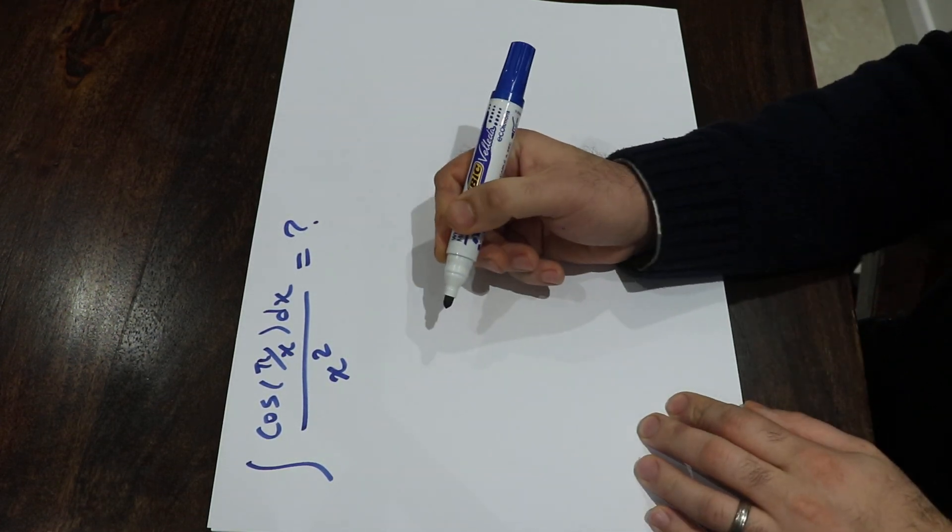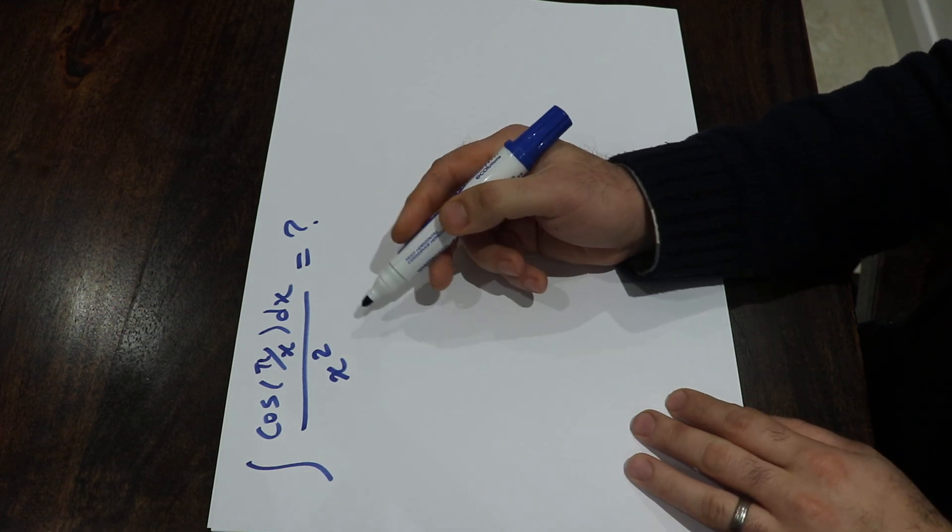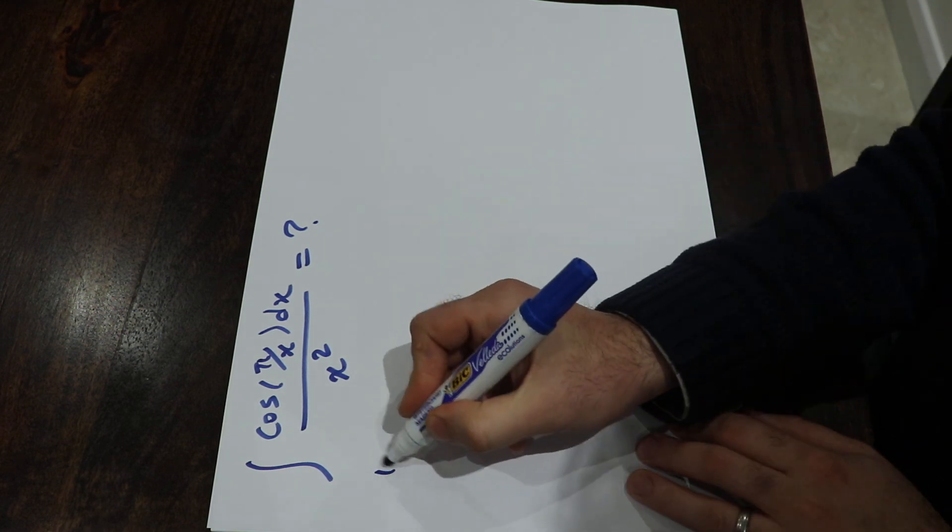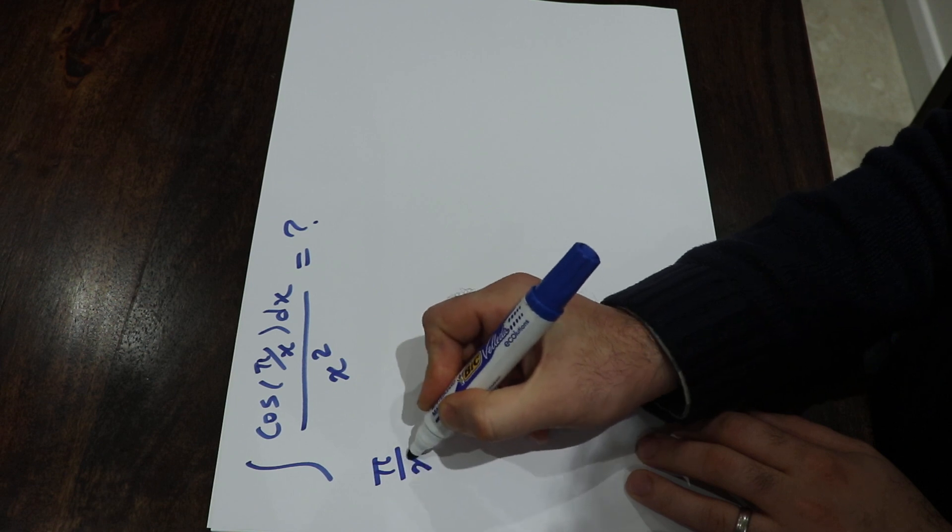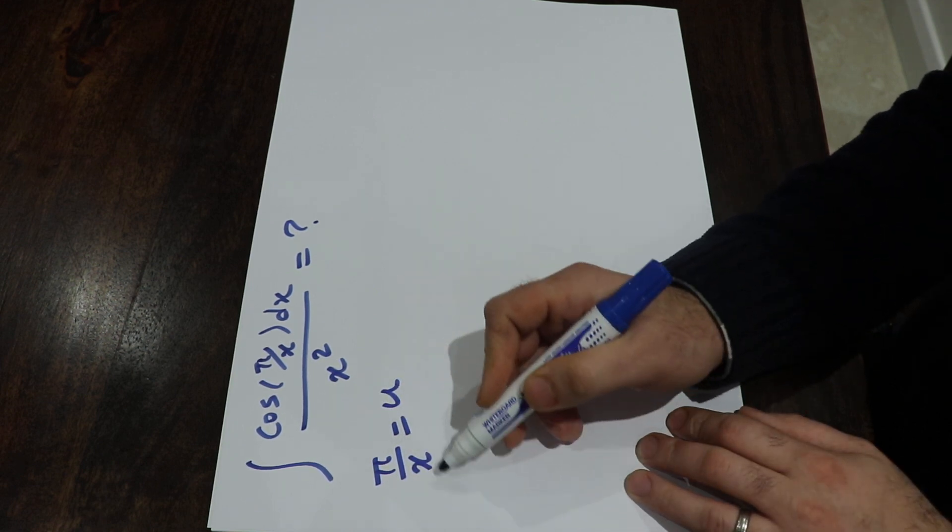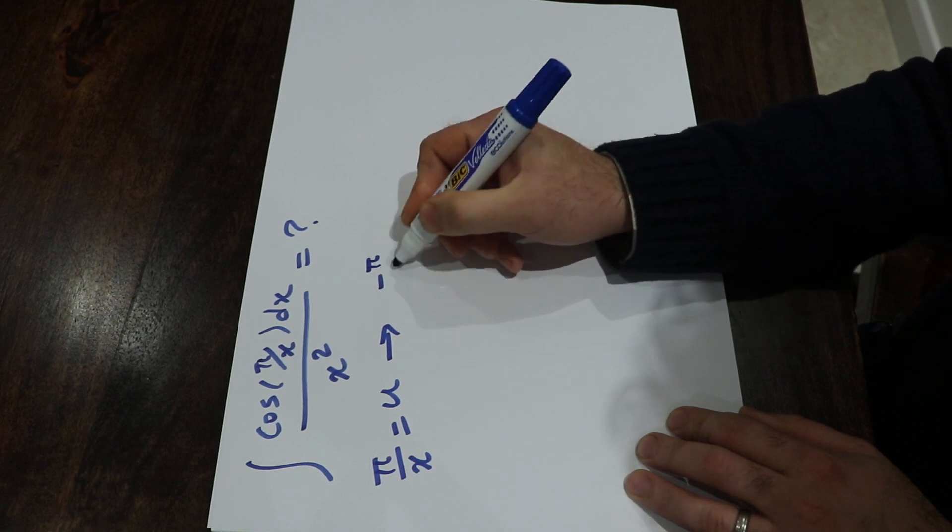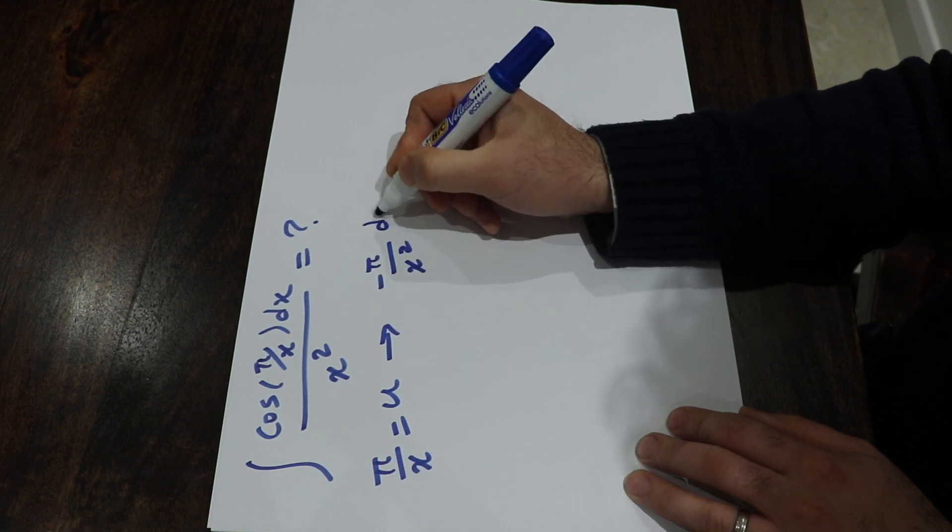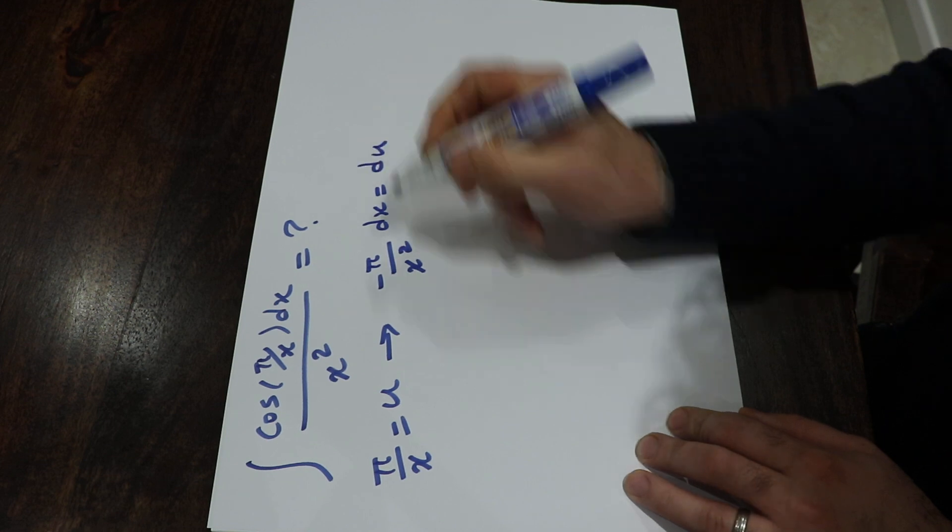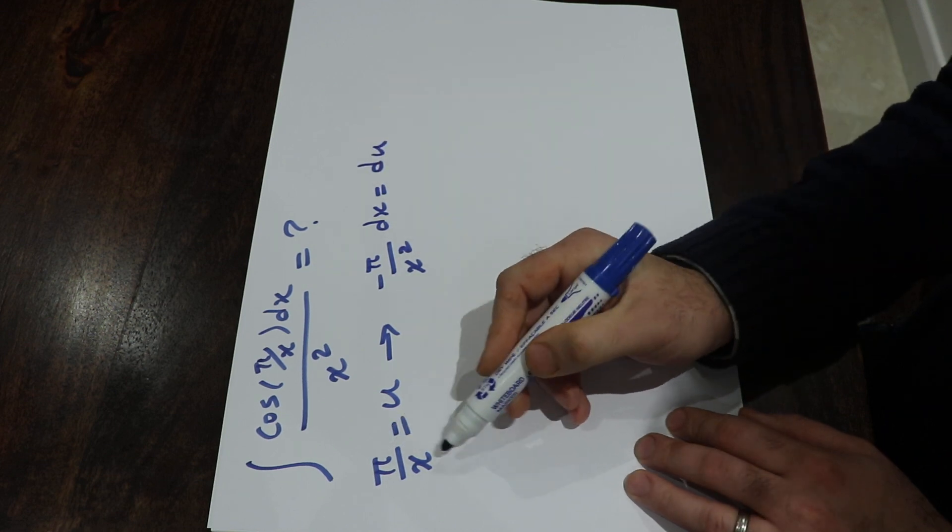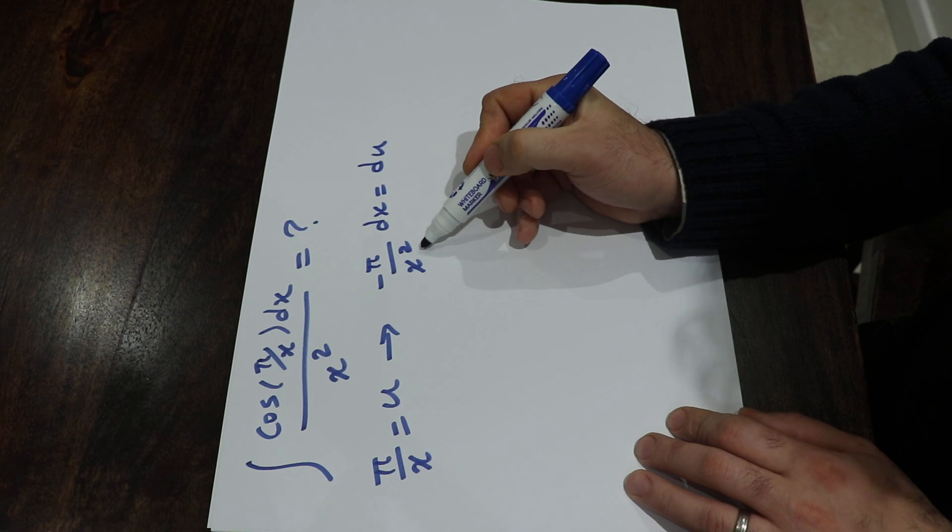To calculate this integral you should use the substitution rule. So, if you define pi divided by x as u and take the derivative from each side of this equation, you will get minus pi over x squared dx is equal to du. Remember the derivative of 1 divided by x is minus 1 divided by x squared.